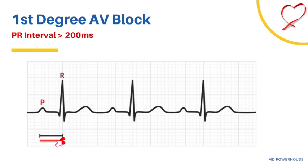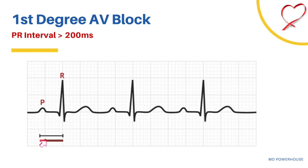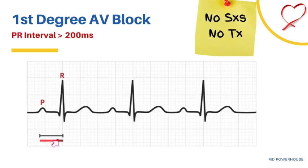Not only is the PR interval prolonged in first degree AV block, but it is also constant. So if the PR interval is 280 milliseconds, every PR interval will be 280 milliseconds — prolonged and constant. An extremely high-yield point is that first degree AV block is typically asymptomatic and does not require any treatment. If you see answer choices like 'no treatment needed' or 'asymptomatic,' those are likely correct for a first degree AV block.